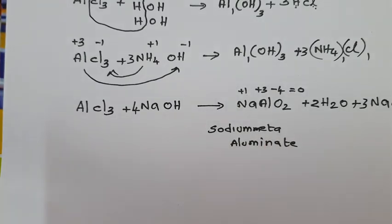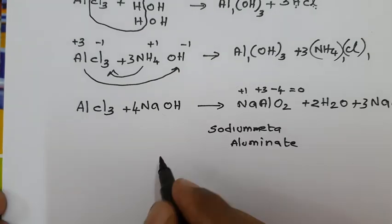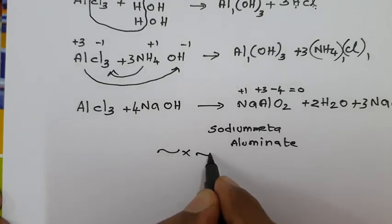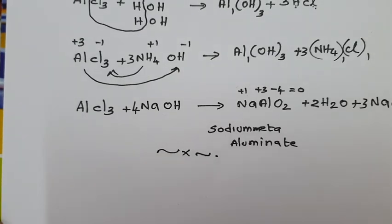So in total, Aluminium Chloride has 4 preparation methods and 3 properties. All the reactions are very easy.